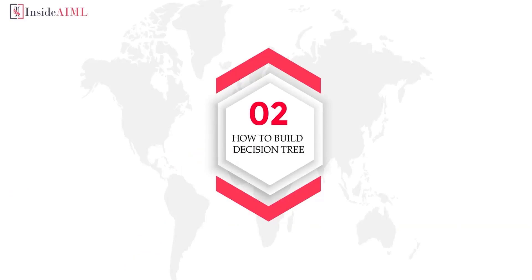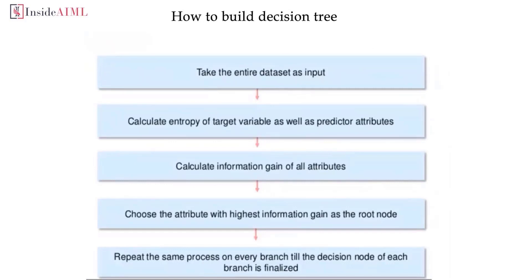The second question is: how to build a decision tree. A decision tree is a flowchart-like structure which comes to a conclusion after asking a specific set of questions. To build one, first take the entire dataset as input. Then calculate the entropy of the target variable as well as the predictor attributes. After that, calculate the information gain of all the attributes and select the attribute with the highest information gain as the root node. Repeat this process until the leaf node is reached for each branch.